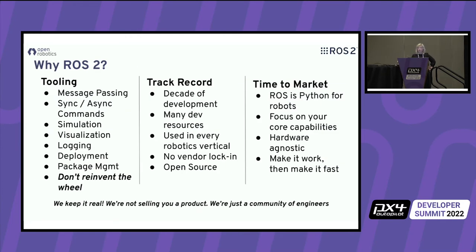Why use ROS 2? From a high level, ROS has a lot of tools for message passing, synchronous and asynchronous command generation, simulation, visualization, logging, deployment, and package management — it's all there. You don't have to reinvent the wheel. People have been using this for over a decade. ROS 2 is now four or five years old, it's used in every robotics vertical, it's open source so there's no vendor lock-in, and it genuinely increases people's time to getting stuff done.